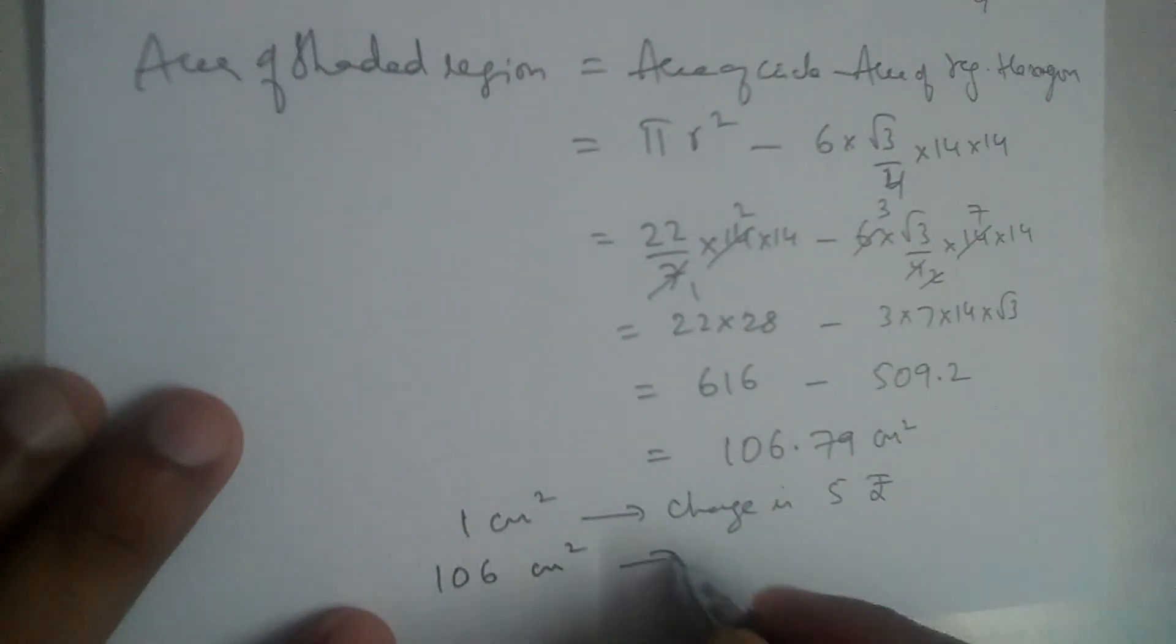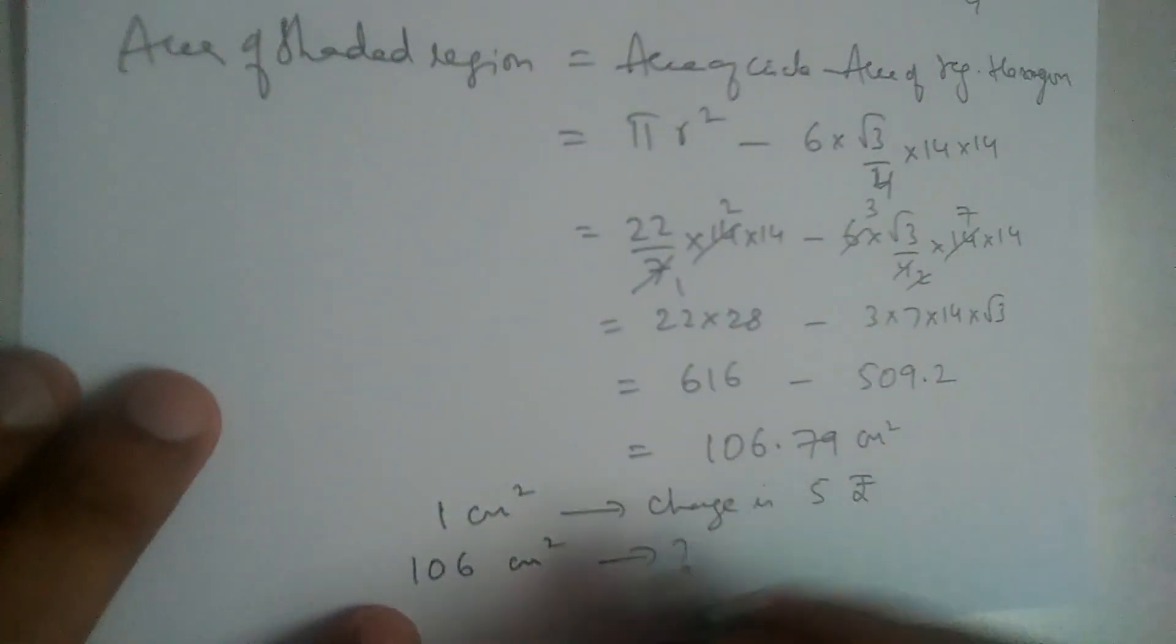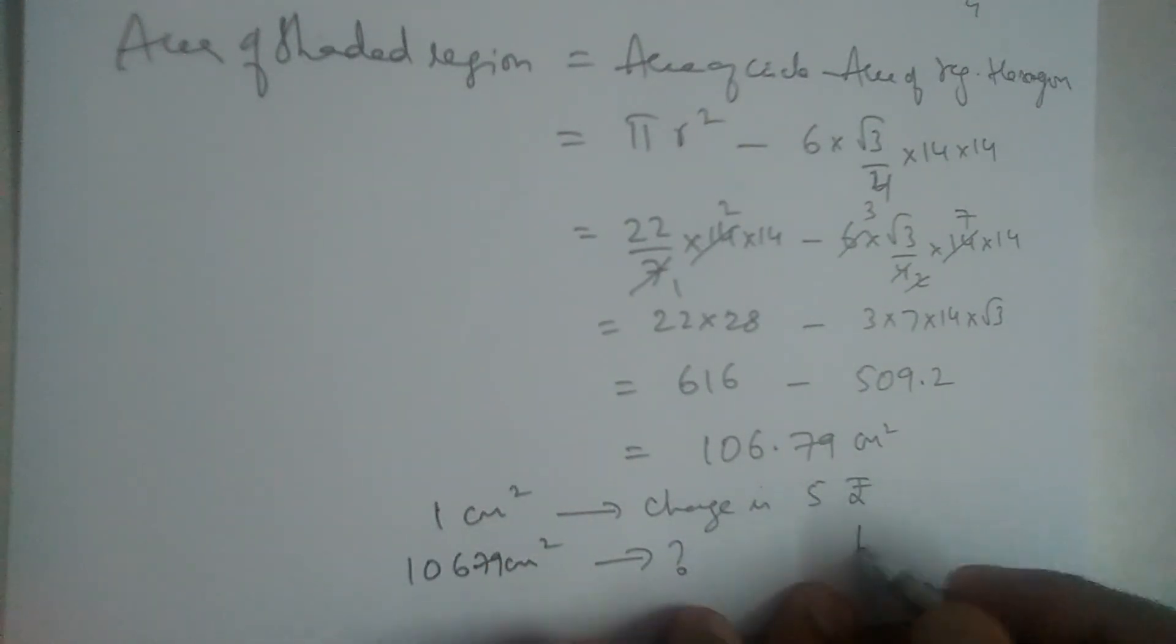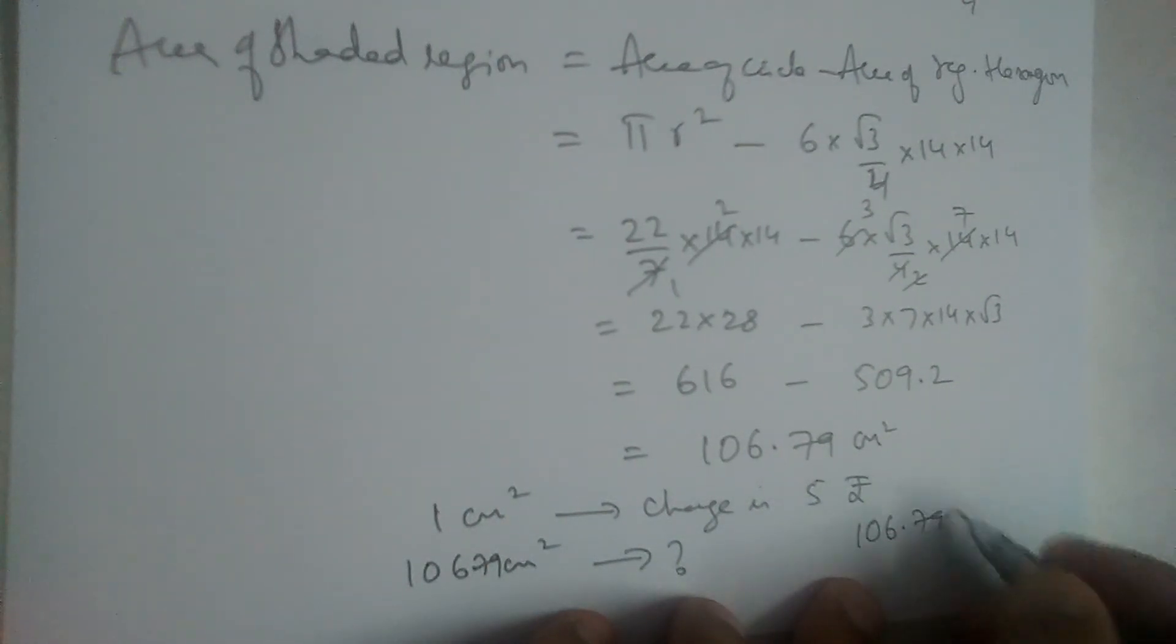We should multiply 106.79 with 5. So it is 106.79 multiplied by 5 will give us 533.95 rupees.